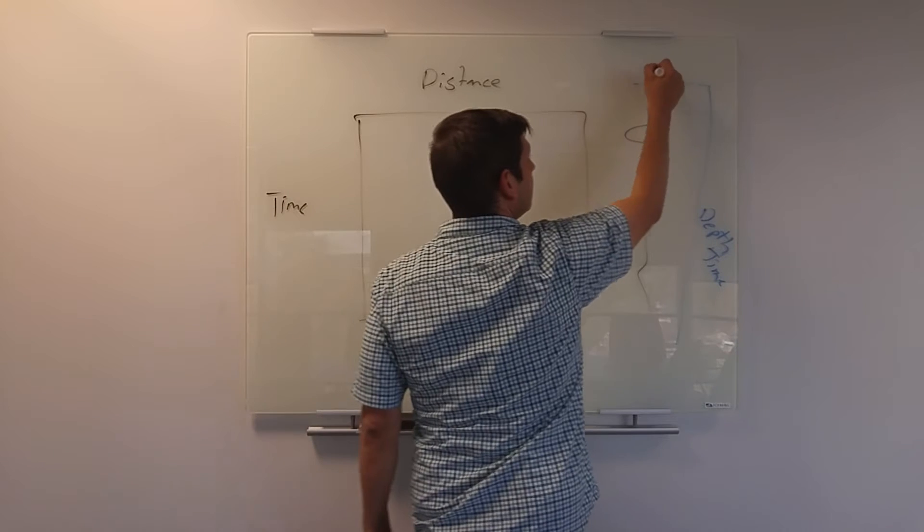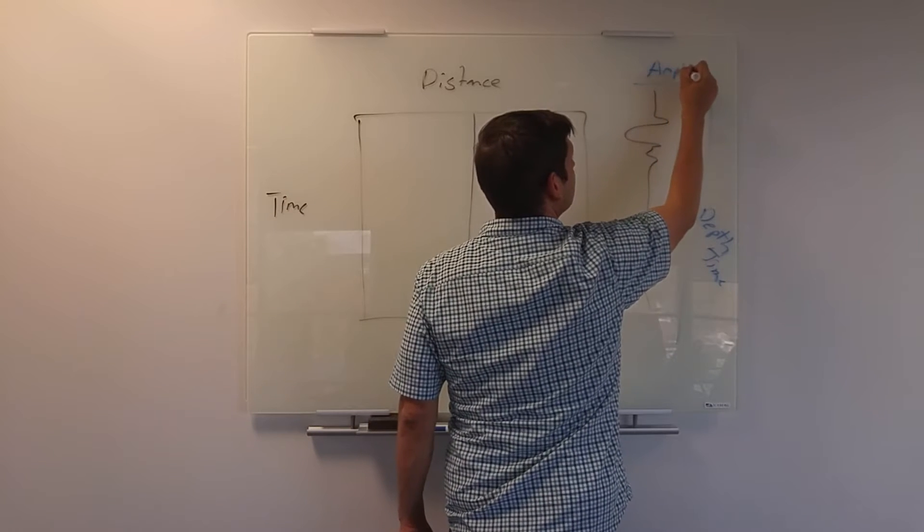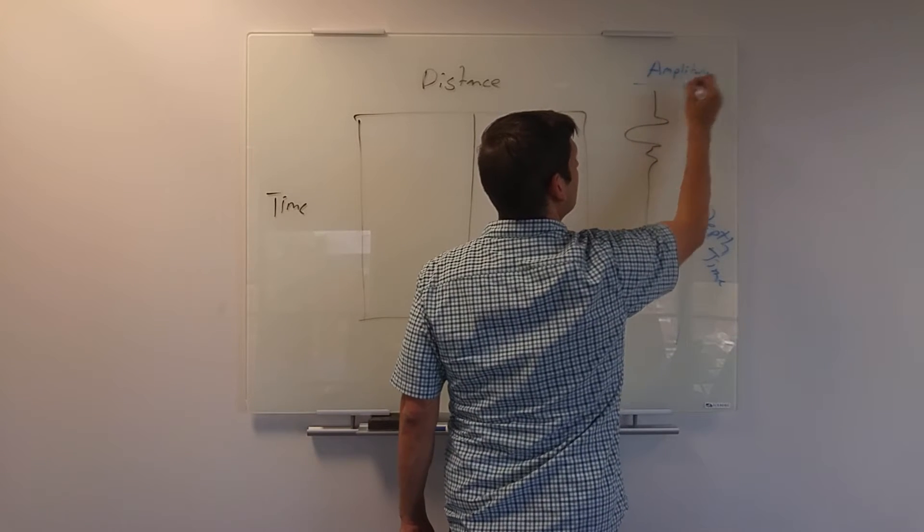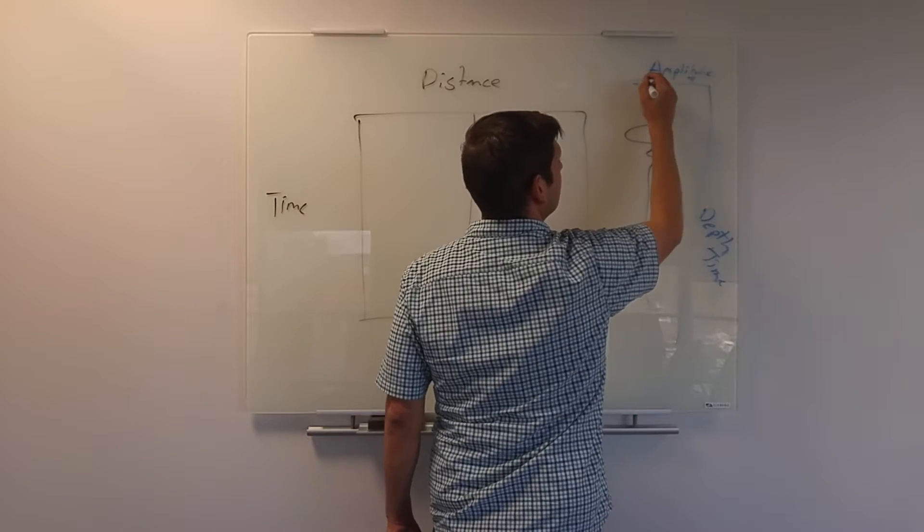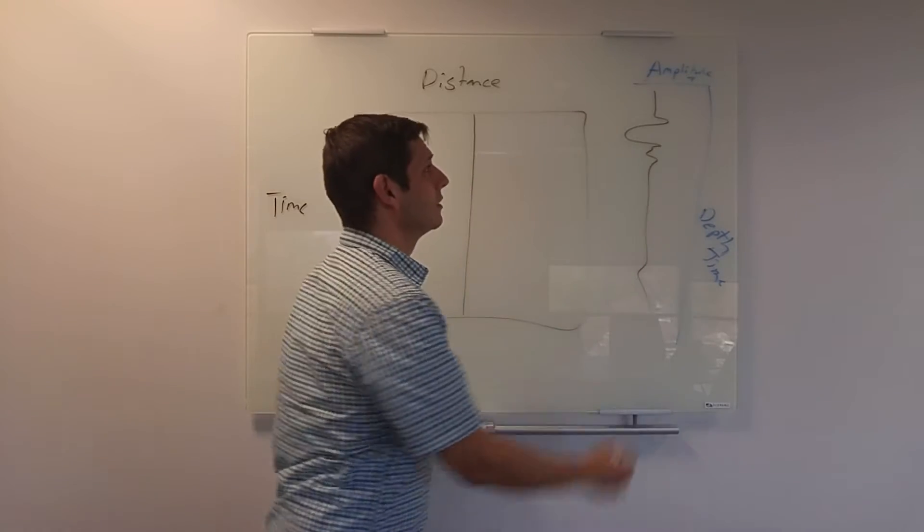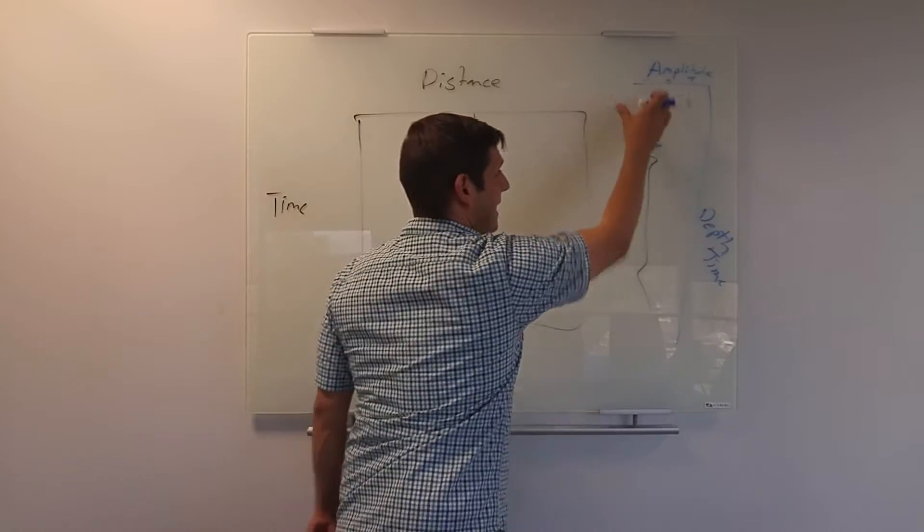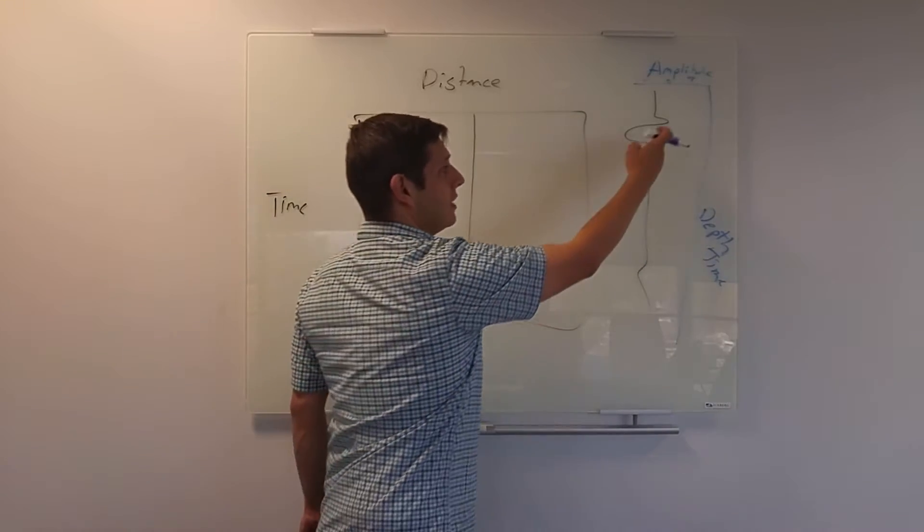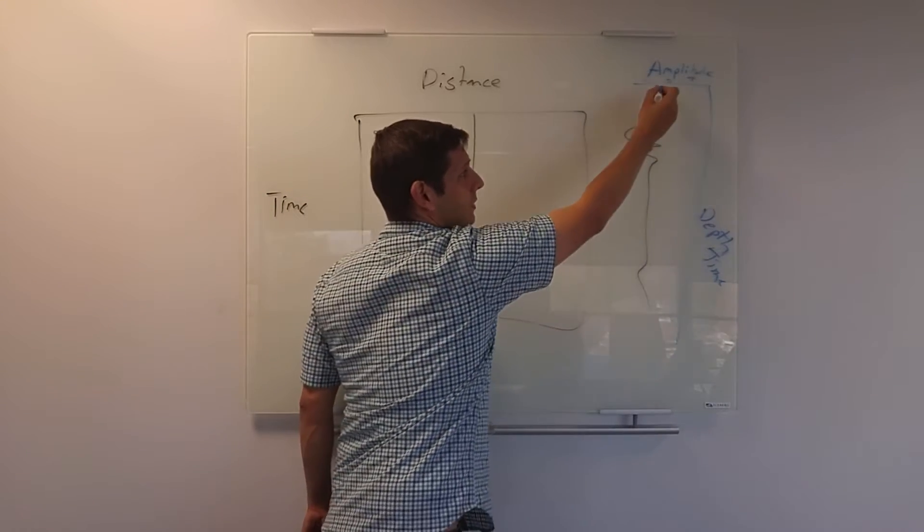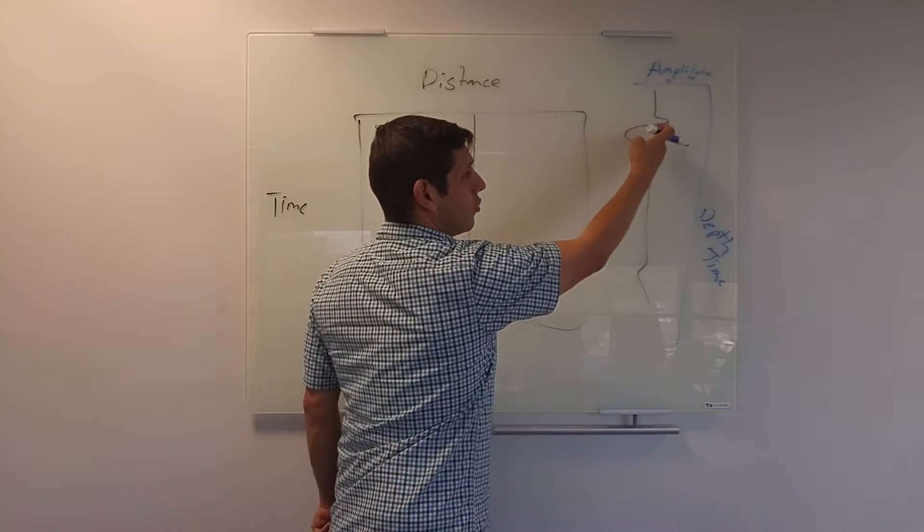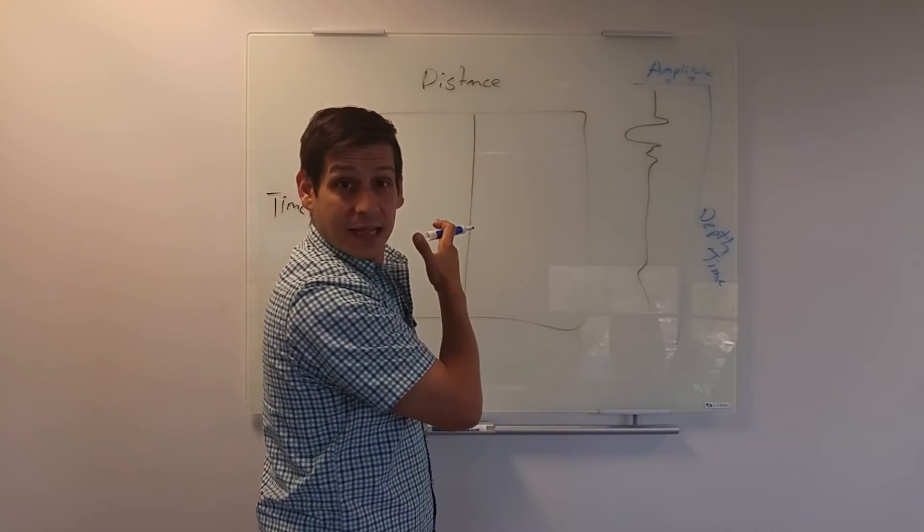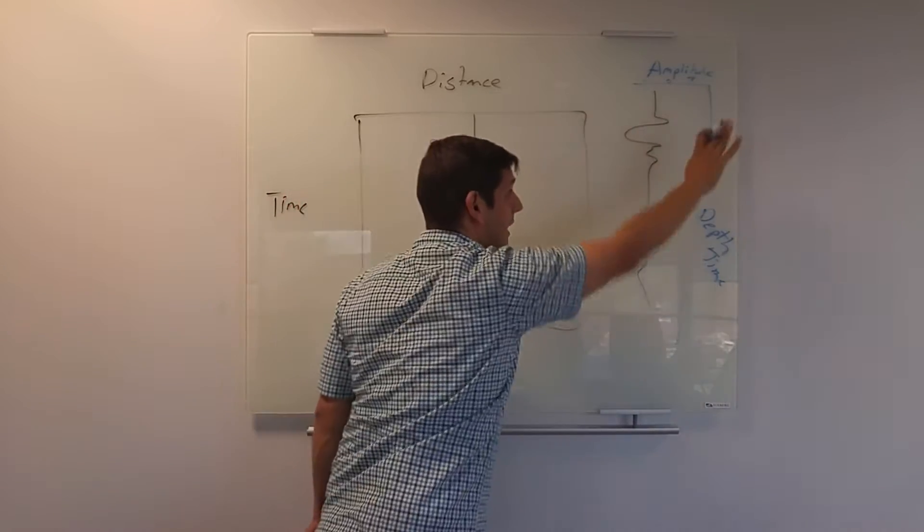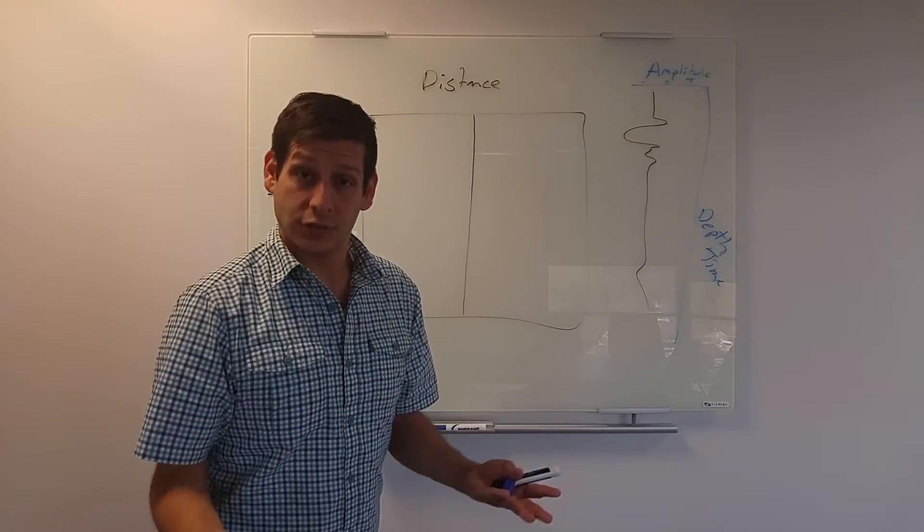This scale on the side is going to be depth or time. And on top, it's going to be amplitude, and it gives you plus and minus from a zero. So this is the amplitude it's going to give you.